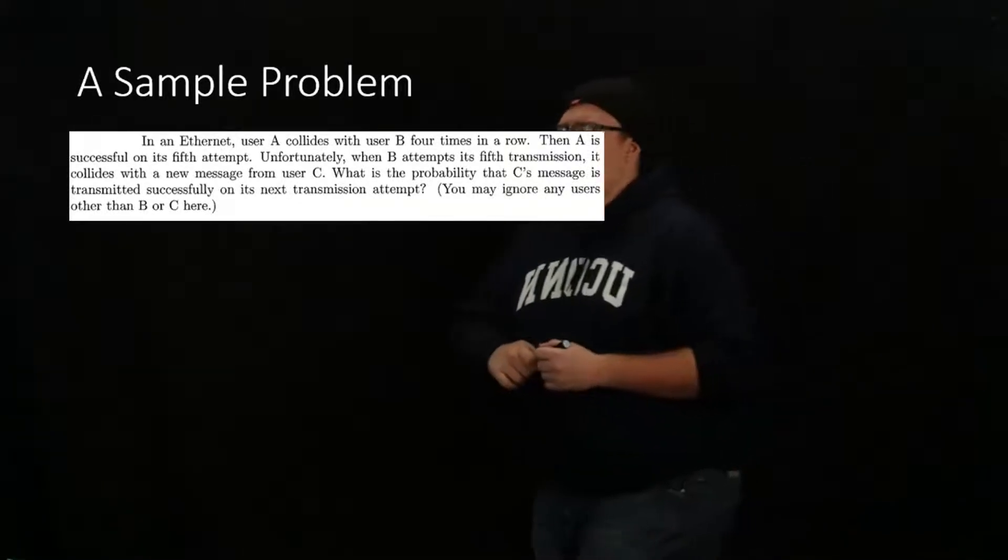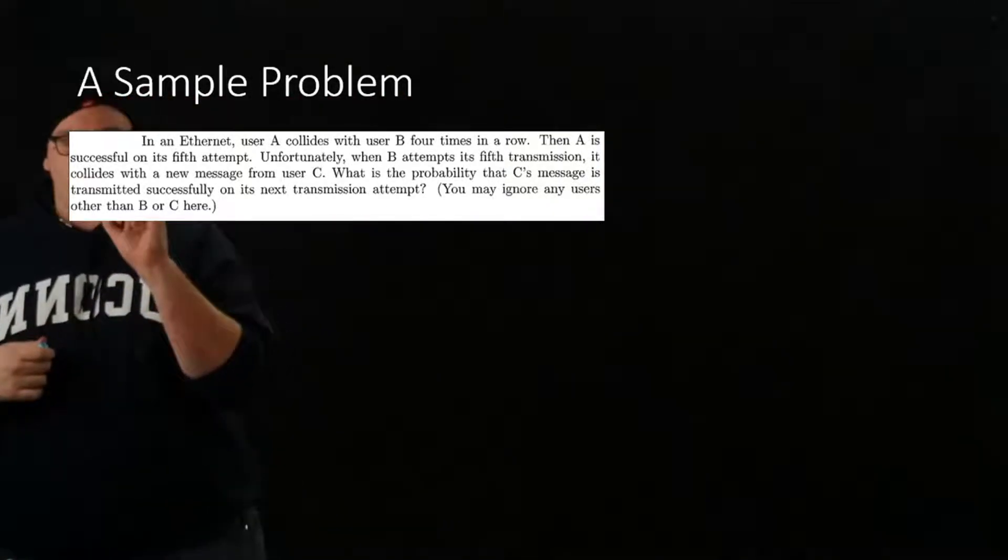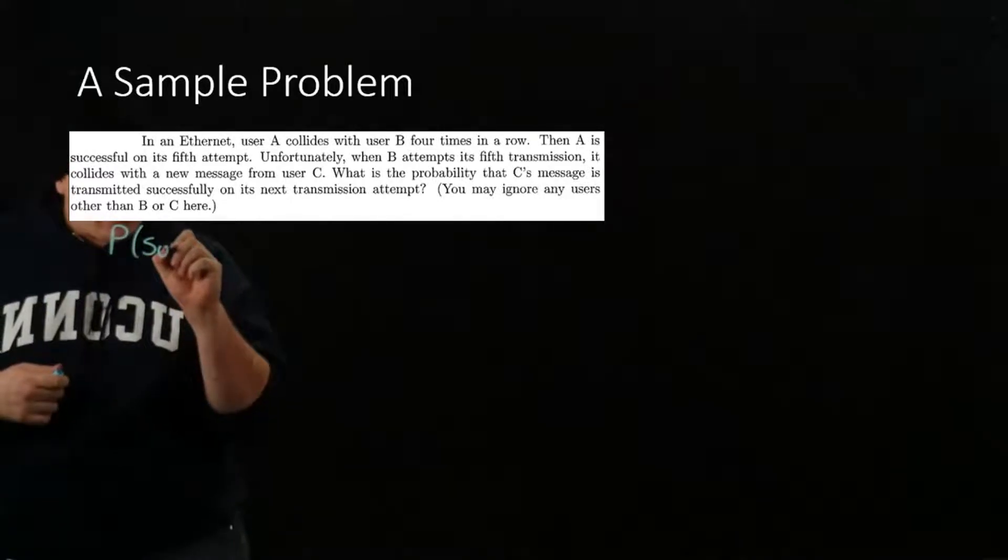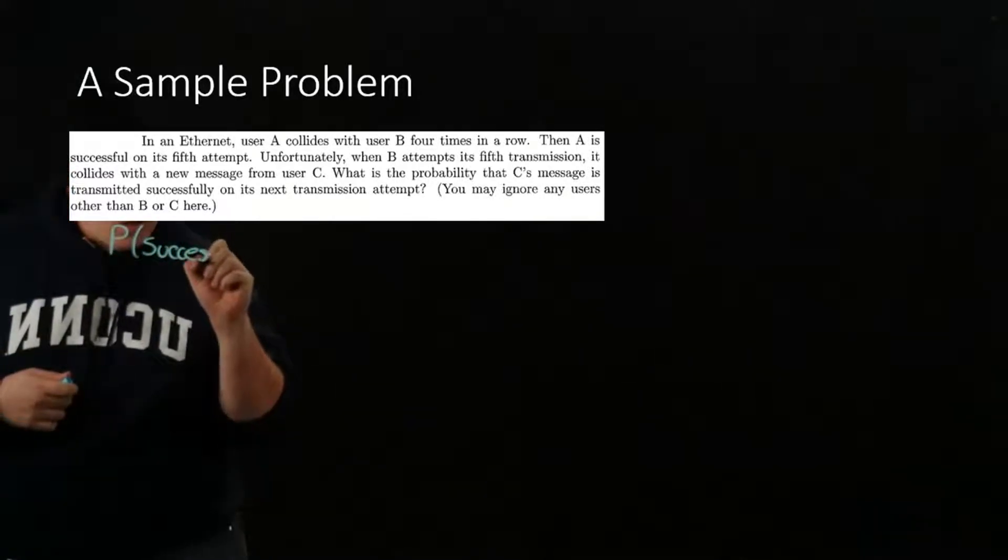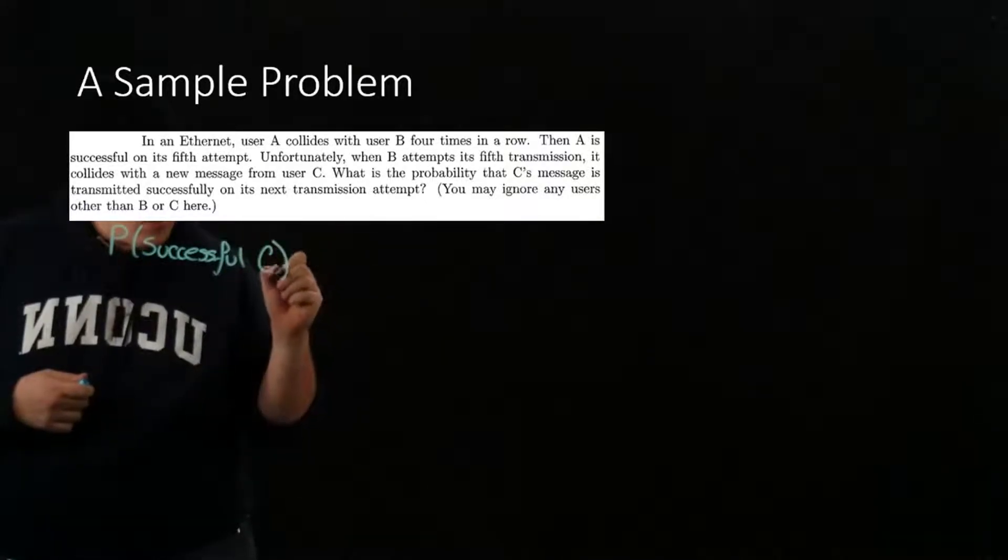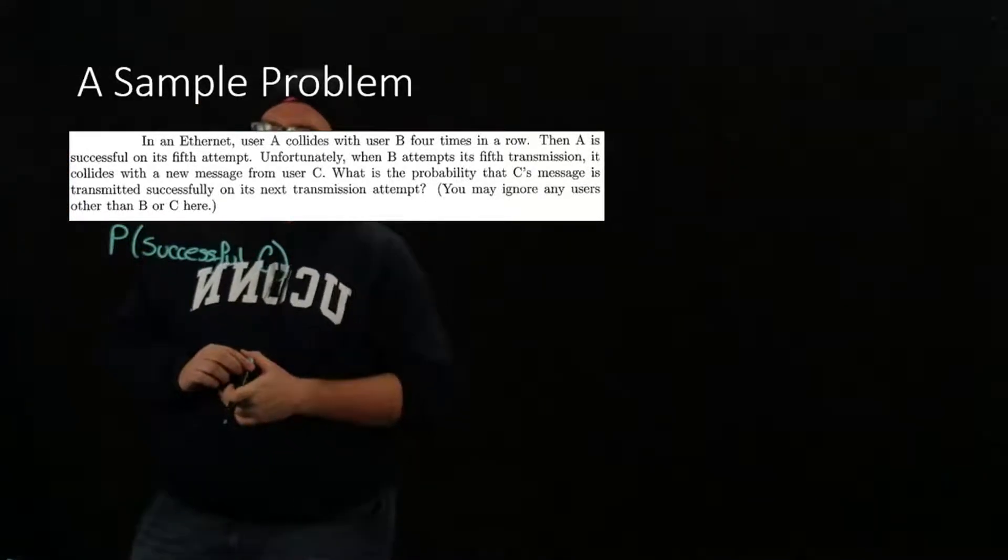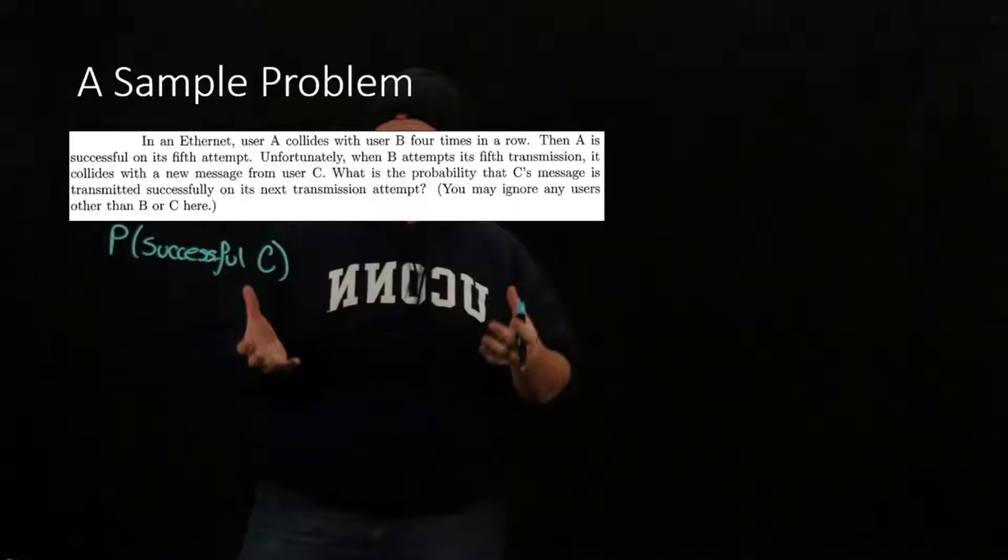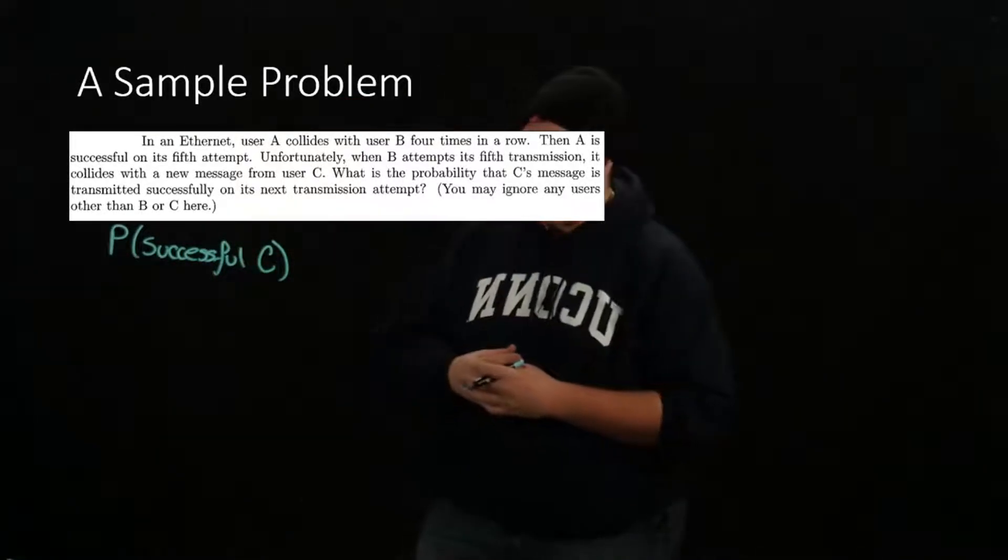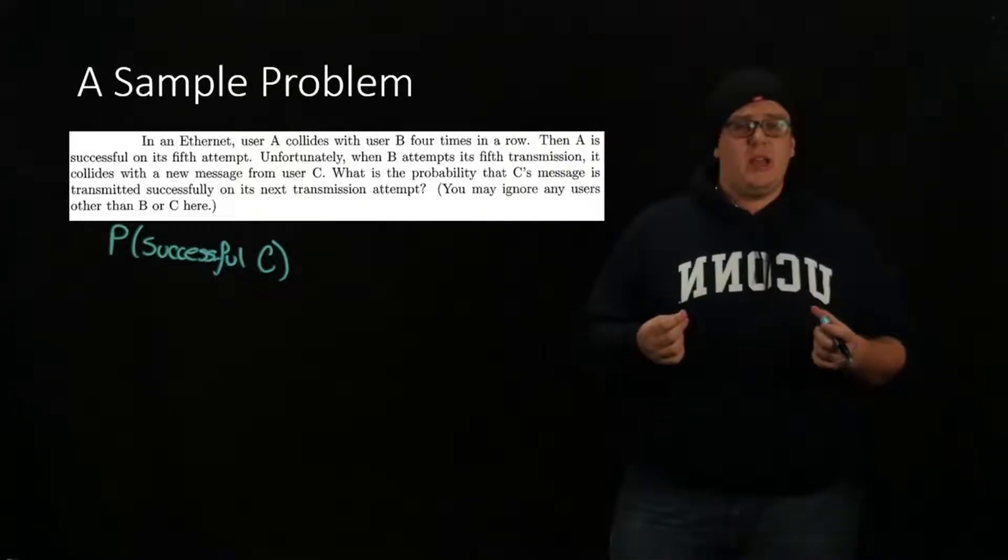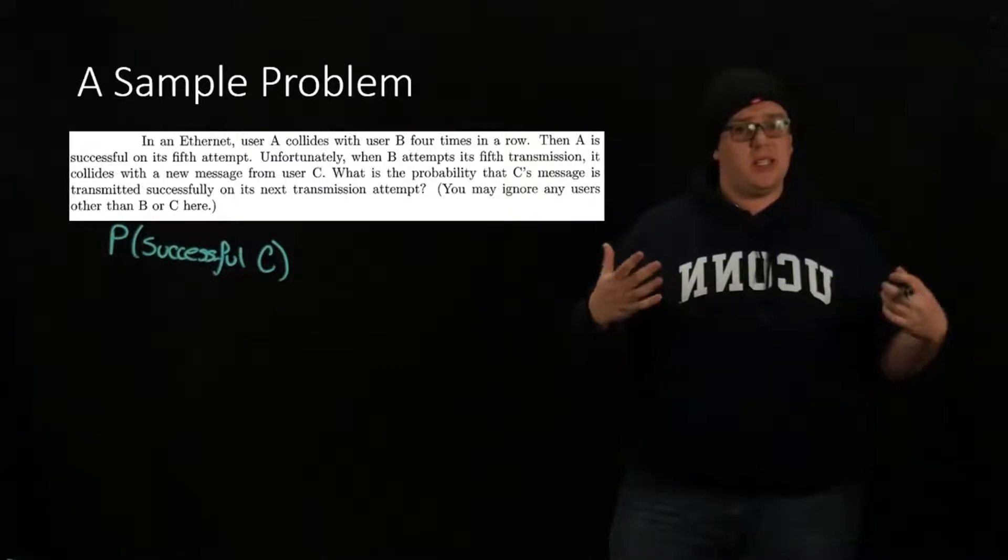Basically we want to know the probability of successful C on this attempt. A successful attempt will be if user C and user B do not try to transmit at the same time.